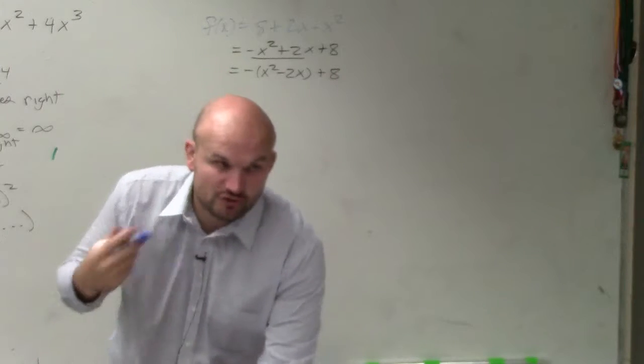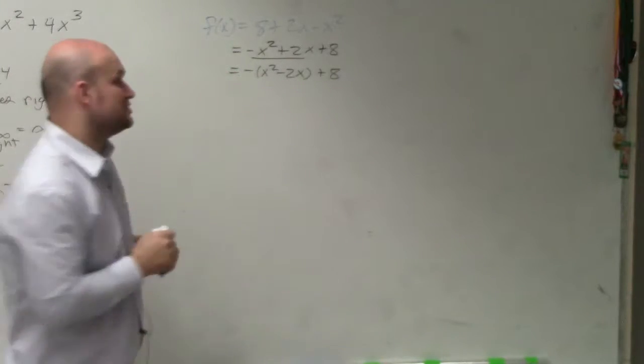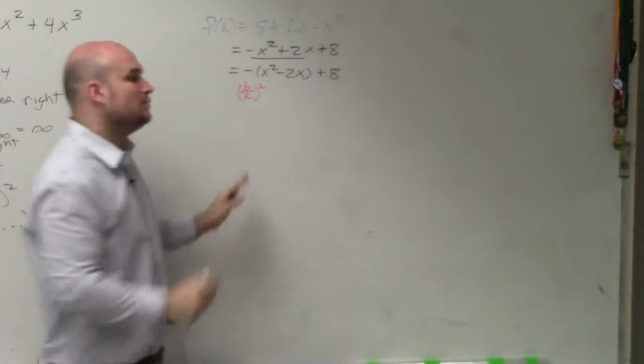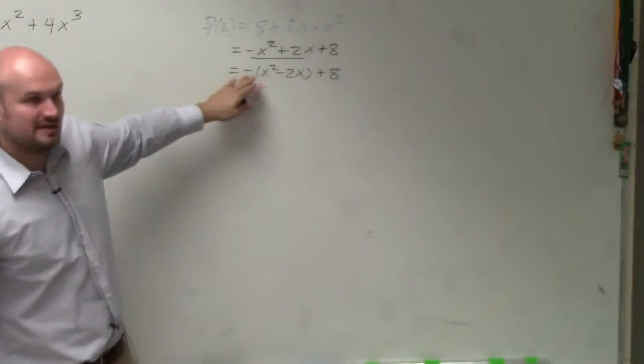Then I now need to create a perfect square trinomial. So to do that, I take b divided by 2 and square it. You want to take the b after you factored out the negative. So therefore, my b in this case is negative 2 divided by 2 squared.